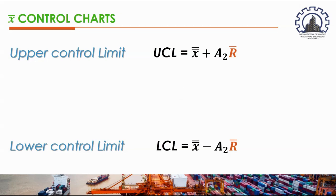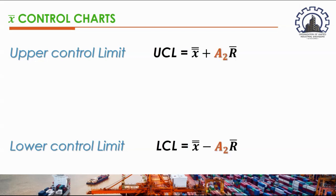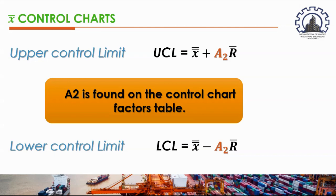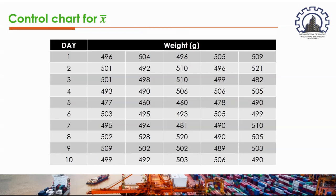R-bar is the average of the sample ranges. A₂ is a constant found on the control chart factor table. This table provides constants for control charts and depends on the subgroup size, which is the number of observations per sample.